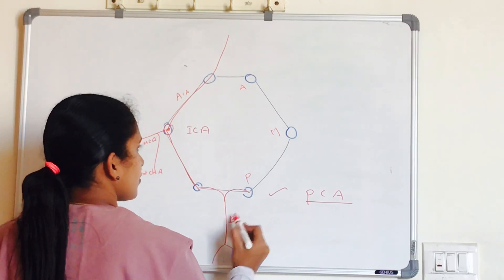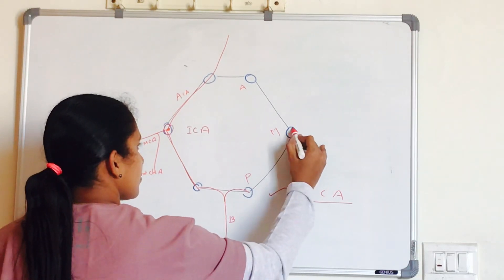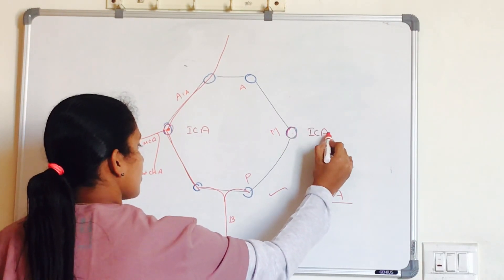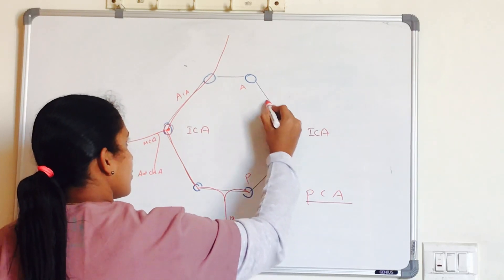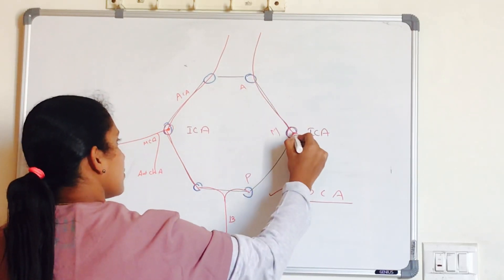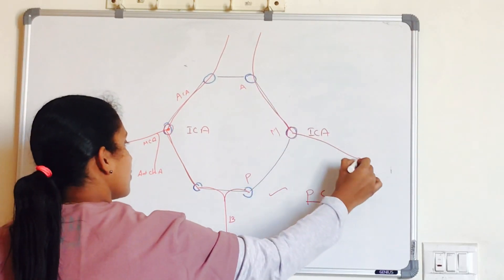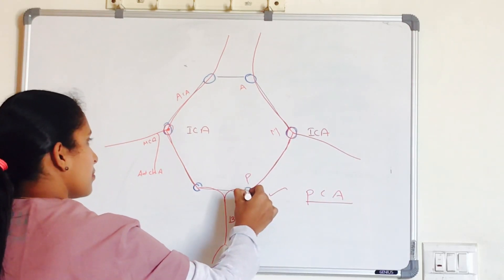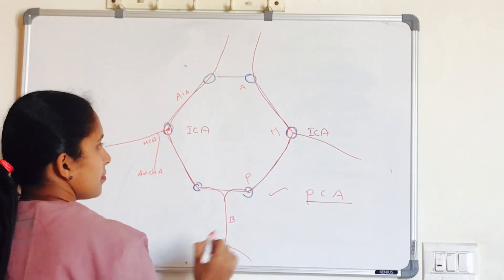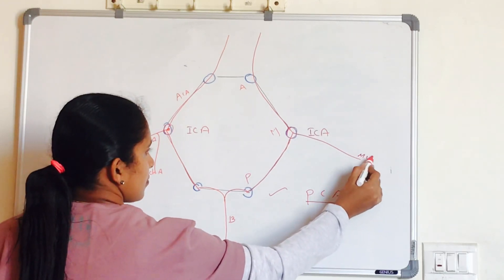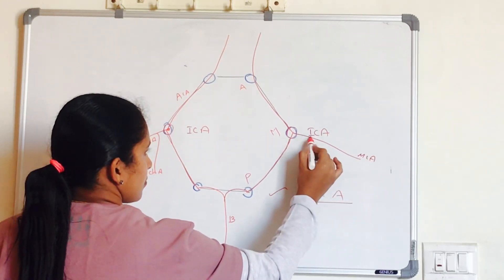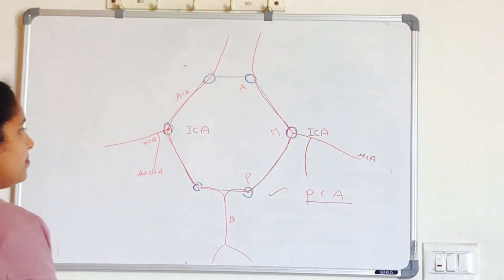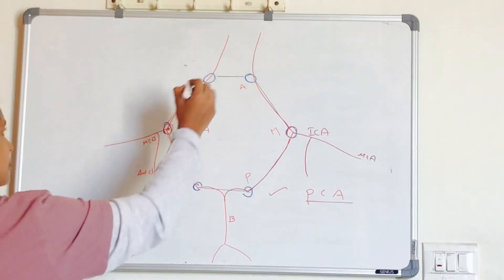The posterior cerebral artery is a branch of the basilar artery. The internal carotid artery gives two branches: anterior cerebral and middle cerebral. It also gives another branch called the posterior communicating artery. So these three branches are from the internal carotid. From the middle cerebral artery, we have the anterior choroidal artery.